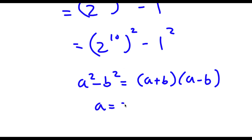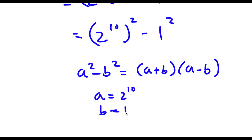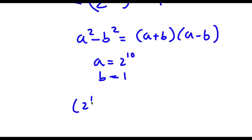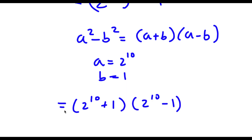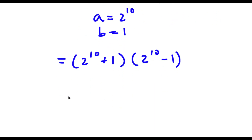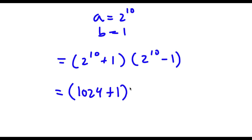So in this case a is equal to 2 to the power of 10 and b is equal to 1. So I have 2 to the power of 10 plus 1, times 2 to the power of 10 minus 1. Now 2 to the power of 10 is equal to 1,024. So now I have 1,024 plus 1, times 1,024 minus 1.